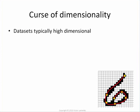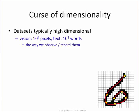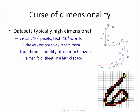Typically, datasets in machine learning are high-dimensional. If you're dealing with images, you have tens or hundreds of thousands of pixels. If you're dealing with text, you have millions to billions of words. That's at least the way we record and observe the data. But in truth, the true dimensionality might actually be a lot lower — your data might be straddling some low-dimensional manifold in a high-dimensional space, and what you want is to figure out that manifold and use it as your dimensions.